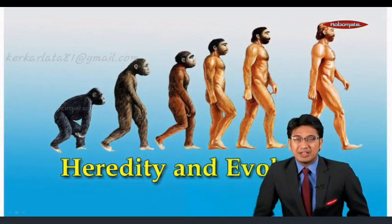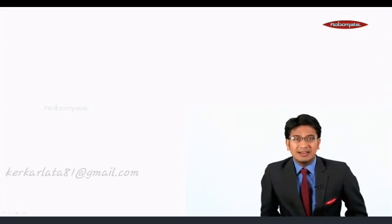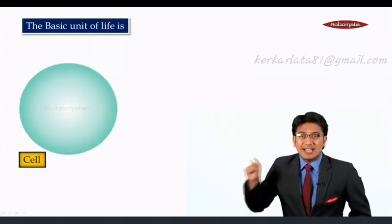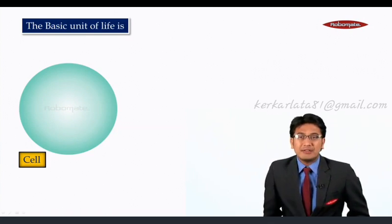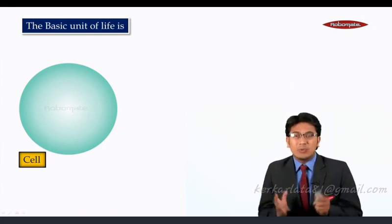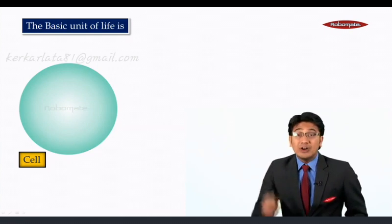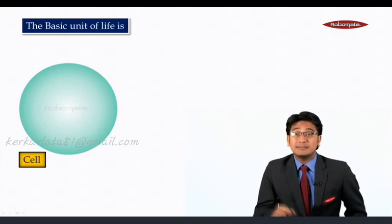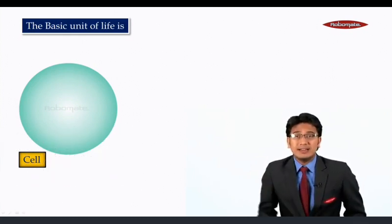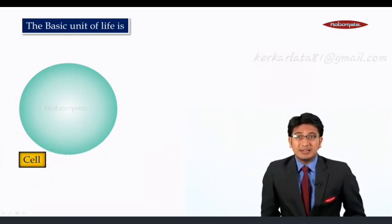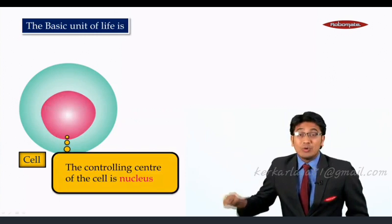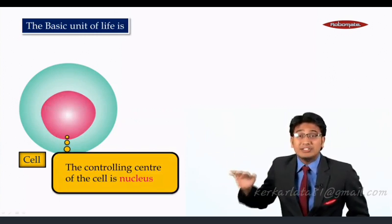Let's start the chapter — heredity and evolution. To begin, let's understand the basic unit of life, which is the cell. Cell is the basic unit of life; everything living in the world is made up of cells. The first thing that appeared on this earth was a cell. Now inside the cell there are many organelles, but the main one — the largest — is called the nucleus, which is the controlling center of the cell.